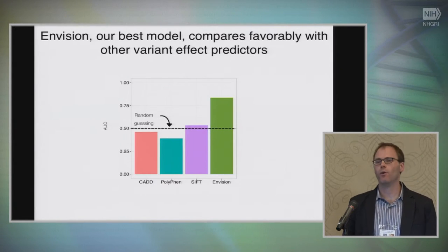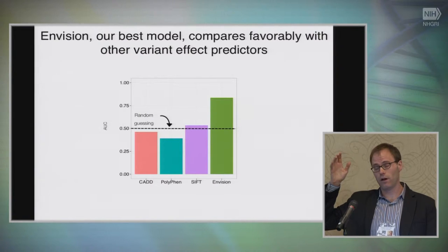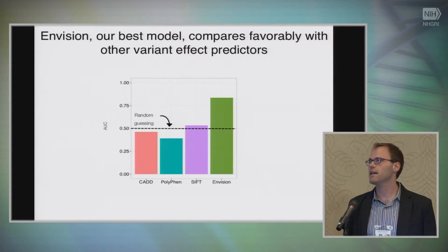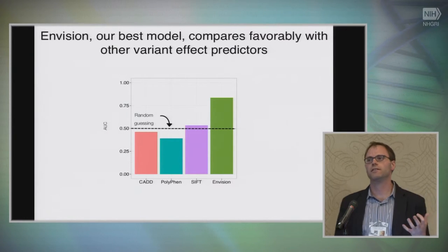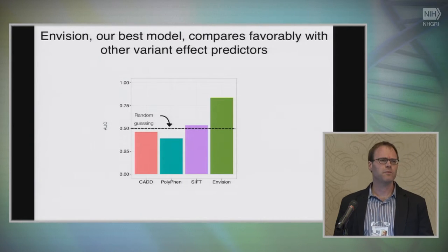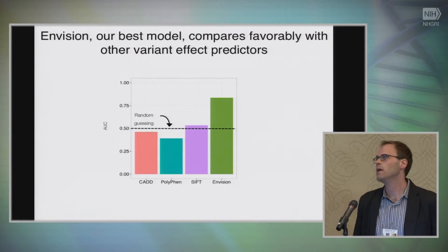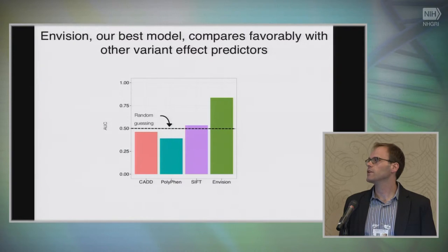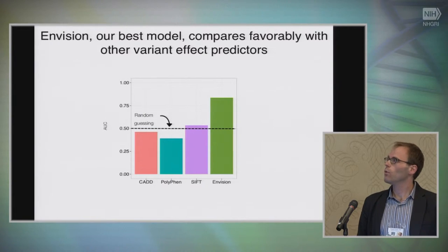This is showing you the performance of our best model, Envision, compared to a few commonly used tools, and we do quite a bit better. This comparison favors us because we're using deep mutational scanning data, so you might ask whether we've just learned the structure of these datasets. We've also used another mutational database, PMD, which has about 100,000 mutations called from the literature over many years — a very messy dataset. When we compare Envision to any of these predictors using the PMD dataset, we beat the other predictors, sometimes by a large margin, sometimes by a small margin, but in every case we do better.